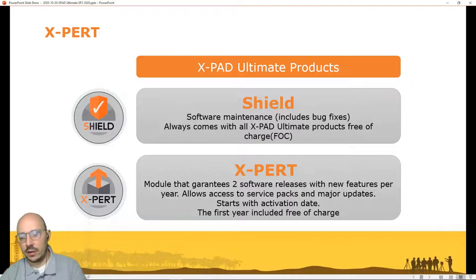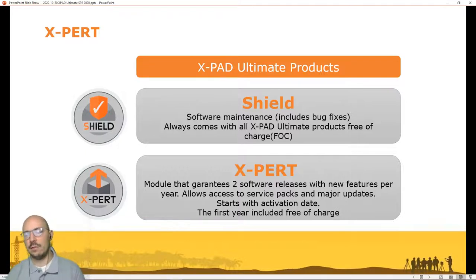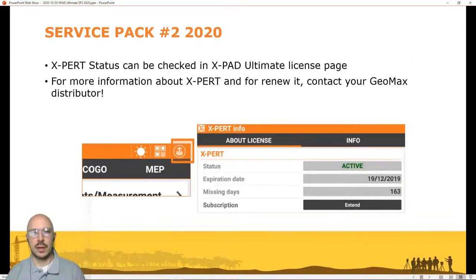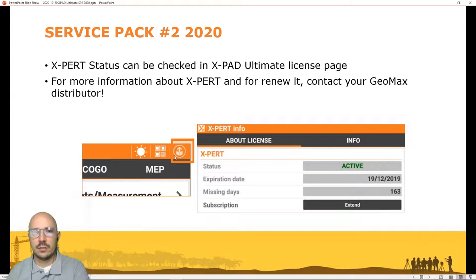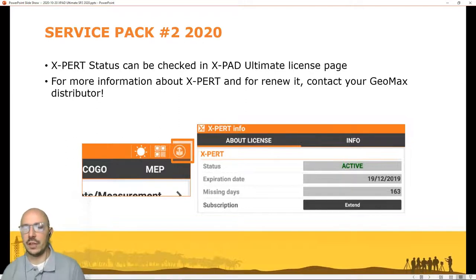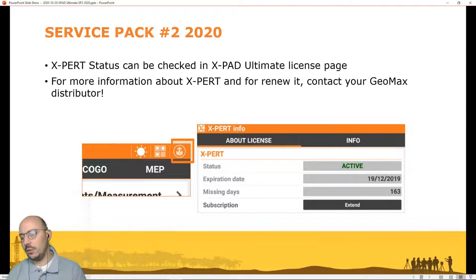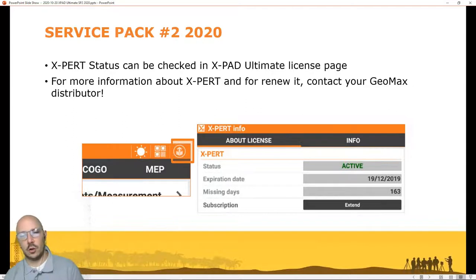Even if you do not have Expert, you have probably received an upgrade on the 27th of October, including improvements and bug fixes included in Shield. You can check your Expert status by opening the software and viewing the expiration date. After the first activation you have one year Expert included, then renewal is needed to use new functions. For information about Expert cost and renewal, contact your GeoMax distributor.